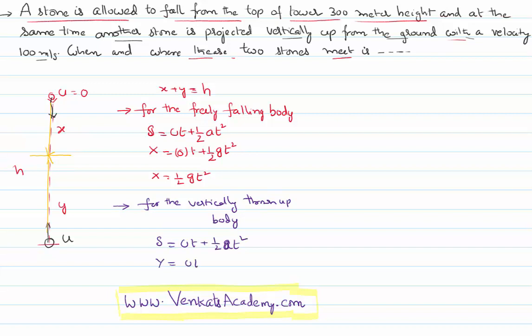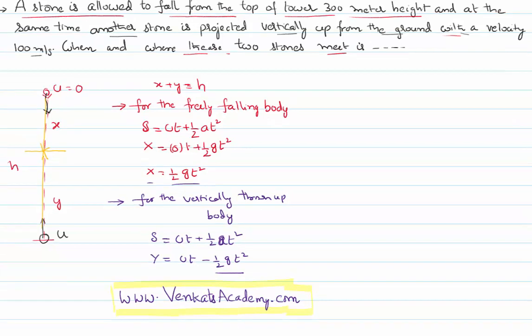s is y, u is there, a is minus g because it is going against the gravity, so minus gt square. Instead of this minus half gt square, as we have calculated in the first part of the problem, x is nothing but equal to half gt square.